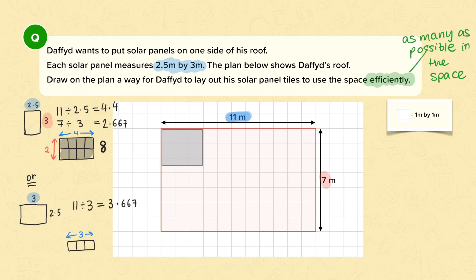And then this way we have 7 divided by 2.5, and 7 divided by 2.5 is equal to 2 and a bit. So you'll get 2 solar panels that way. So then I can see using that arrangement I have 3 lots of 2, which only gives me 6 solar panels.